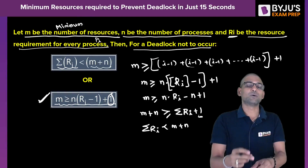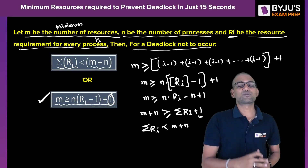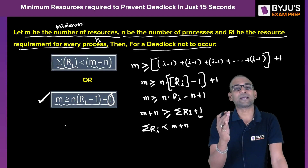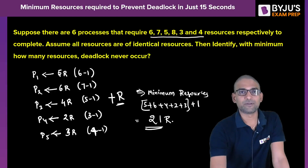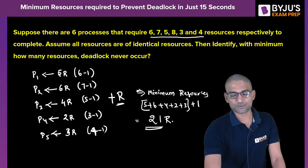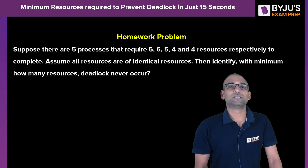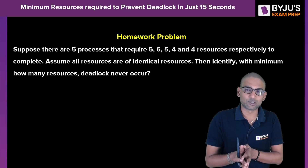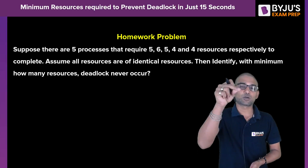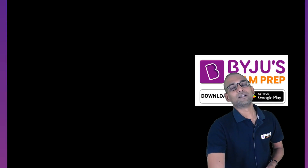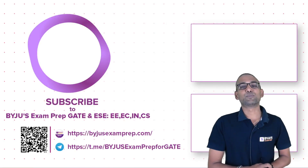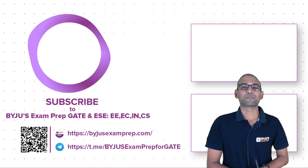To summarize: allocate one less than required for every process and keep one extra buffer resource — that sum is the minimum. The concept of finding minimum resources to prevent deadlock should now be very clear. Solve the homework problem given and post your answer in the comment section. Stay tuned to Juice Exam Prep, keep learning, keep growing. Thank you and have a nice time!